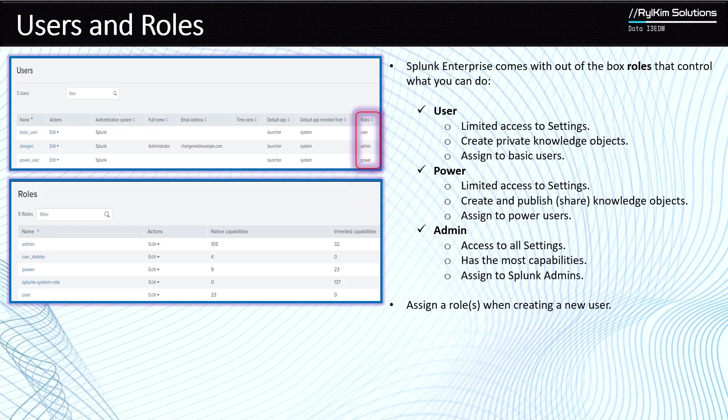Now, when you are creating a user, suppose you are the administrator of a Splunk instance or deployment in an organization and new employees were hired who need to work with it. You have to create users for them. You take those users, determine the role they're going to have, create the users, and then assign the corresponding role to them. For example, we have three users: one with the admin role, one with the user role, and one with the power role.